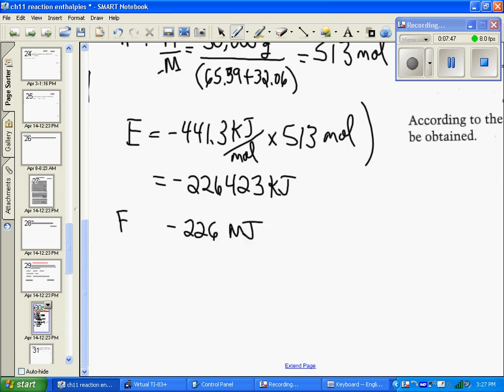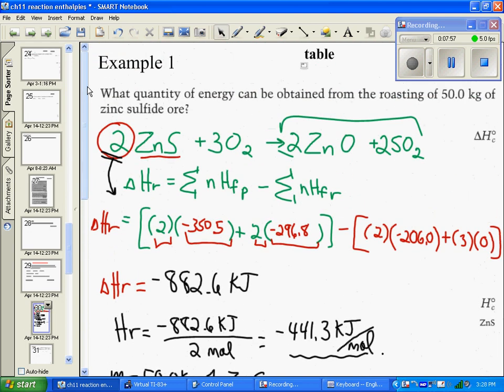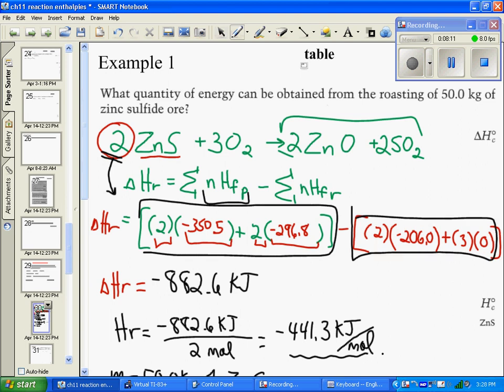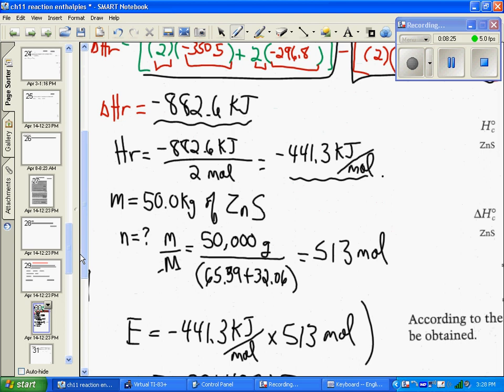So to review what we did in this equation, we had to write the reaction down, we had to balance it. After that, we figured out the total energy that it took to form the products. That's what this bracket is, to form the products. Then we took the total energy to form the reactants. That's this square thing here. Once we worked those two out, we subtracted them. We got the energy for the reaction. We realized that we burned two moles of zinc sulfide according to the reaction. So we divided by two to get the molar enthalpy. Then we want to take that and apply that to the situation of 50 kilograms burning. So we figured out how many moles are in 50 kilograms, multiply it by the 441.3, and we arrived at the answer of 226 million joules of energy.